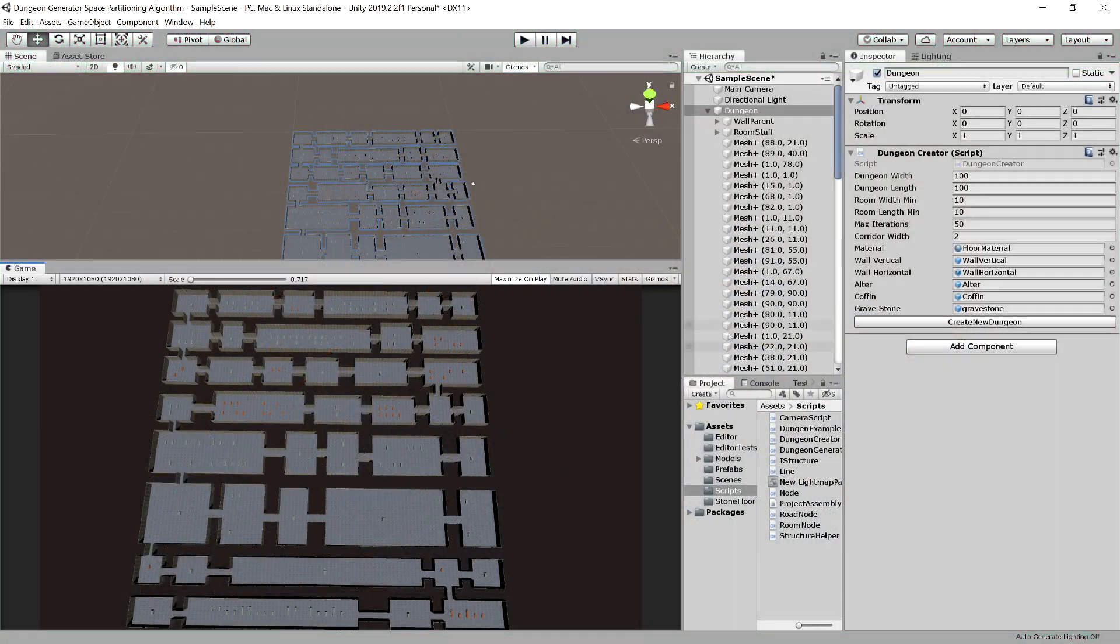The algorithm itself can be modified. We can give it parameters such as dungeon width and length, a room minimum width and minimum length. Do mind that minimum width and minimum length is the minimum size of the space that will be partitioned.